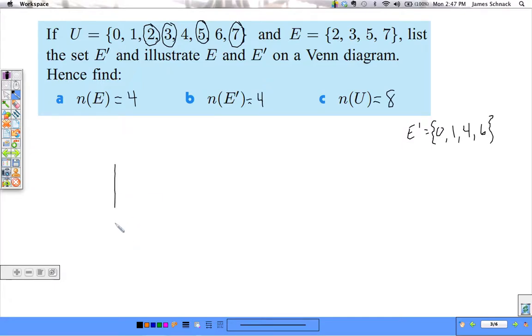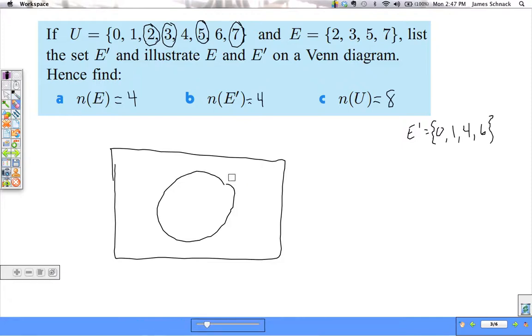And then it says to make a Venn diagram. So, here's a box representing our universal set. This circle is E. What goes inside it? 2, 3, 5, and 7. And outside of it goes 0, 1, 4, and 6. There's a Venn diagram showing the universal set, all the elements, and E inside of it.